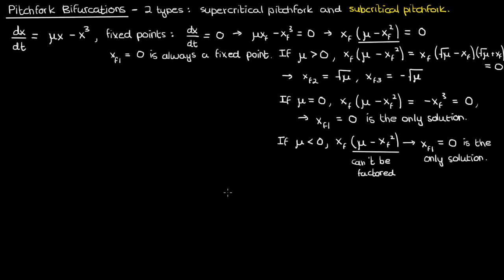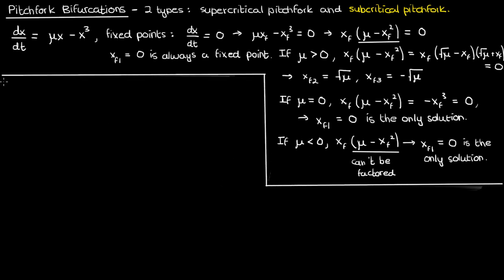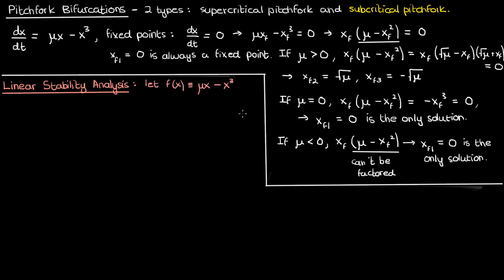So there's clearly something going on as we go from a negative μ to zero to a positive μ — we're going from one fixed point at xf = 0 to three fixed points once μ becomes positive. To get a better idea of what's going on we'll perform some linear stability analysis. We let f(x) = μx − x³, the right-hand side of our dynamical system, take the derivative of f with respect to x, and evaluate that derivative at each of the fixed points.